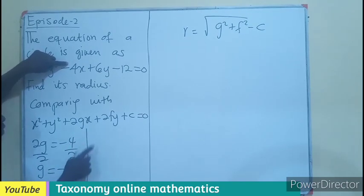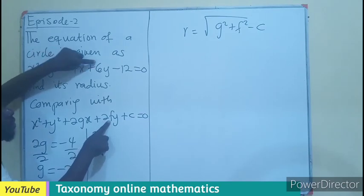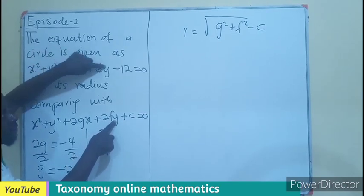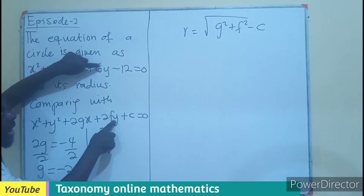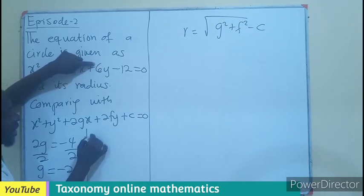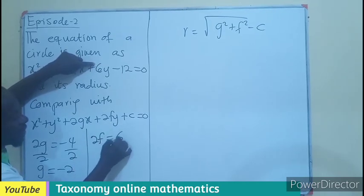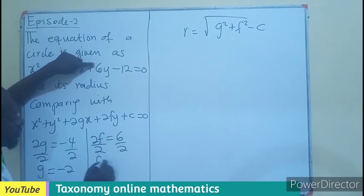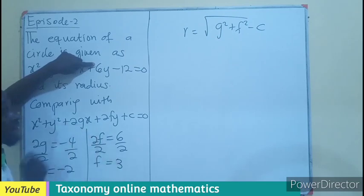If we compare the y terms, 2f will be the same as 6 because the coefficient of y should be the same. So 2f equals 6. Dividing by 2, f equals 3.